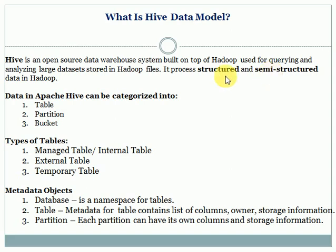Hive can be categorized into tables, partitions, and buckets. Within a table you can create a partition, and within that you can create bucketing. So these are three storage types. You can create a table without partition and without bucketing, or you can create a partition to improve query performance if you have huge data that you query frequently for analysis. The same applies to bucketing as well.